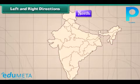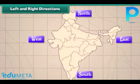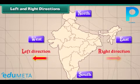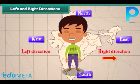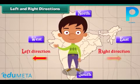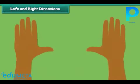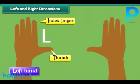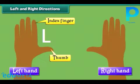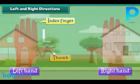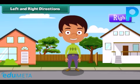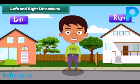In addition to north, south, west and east, we also use left and right directions to locate a place. We use our hands to indicate the left and right directions. The hand that makes the letter L when the index finger and thumb are stretched out is our left hand, and the other one is our right hand. The places towards our right hand are said to be on the right and those towards our left hand are said to be on the left.